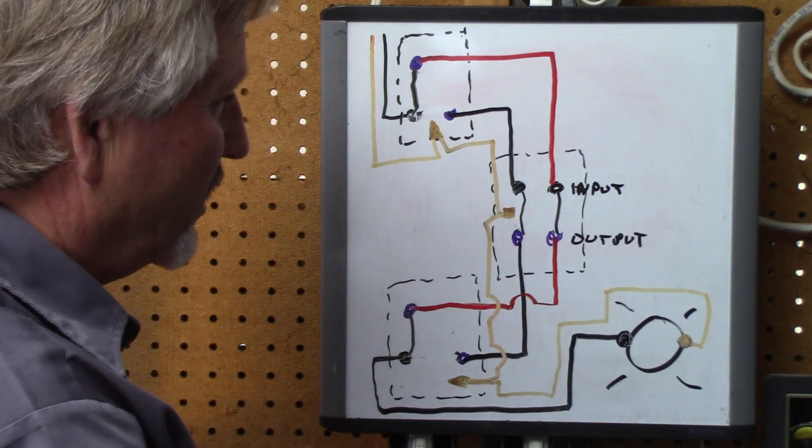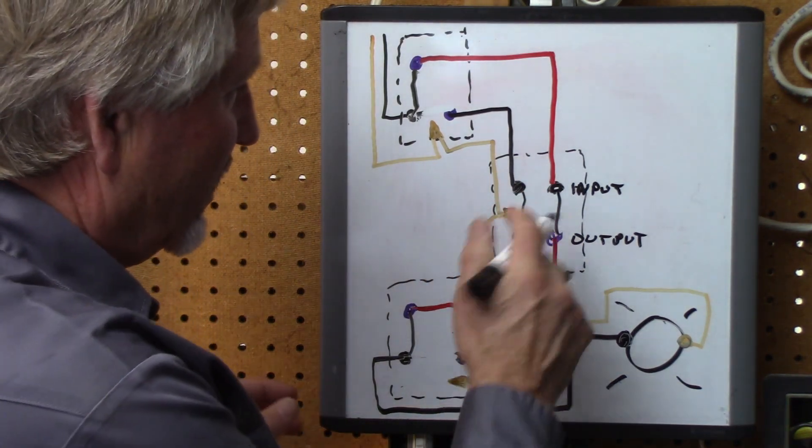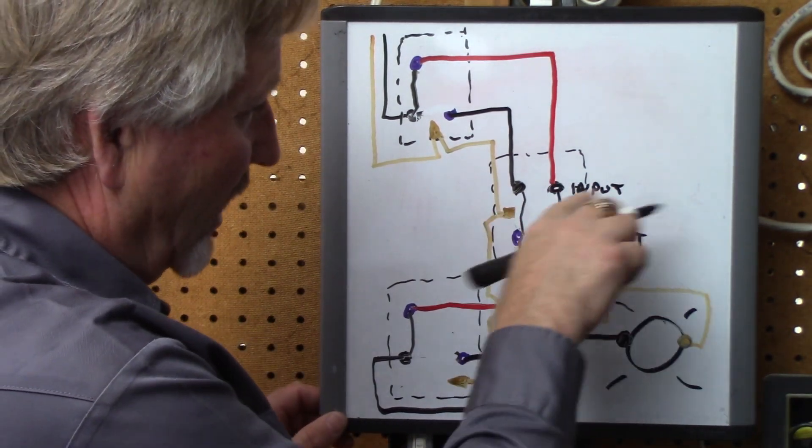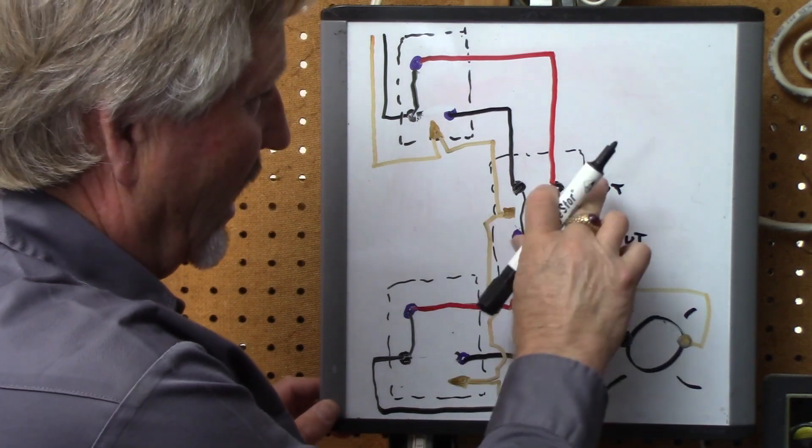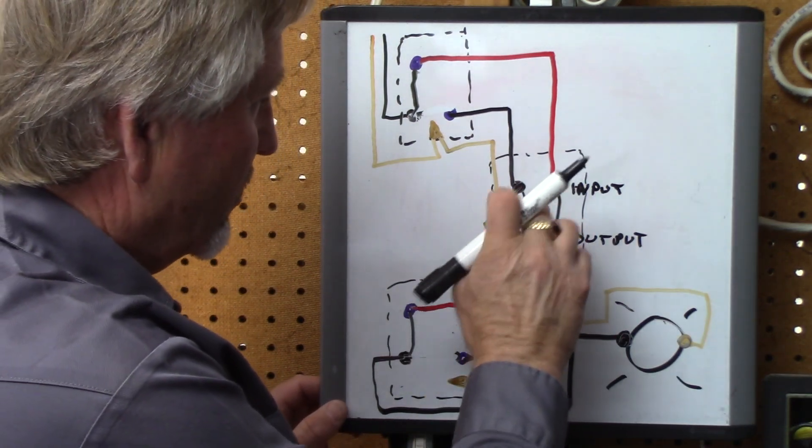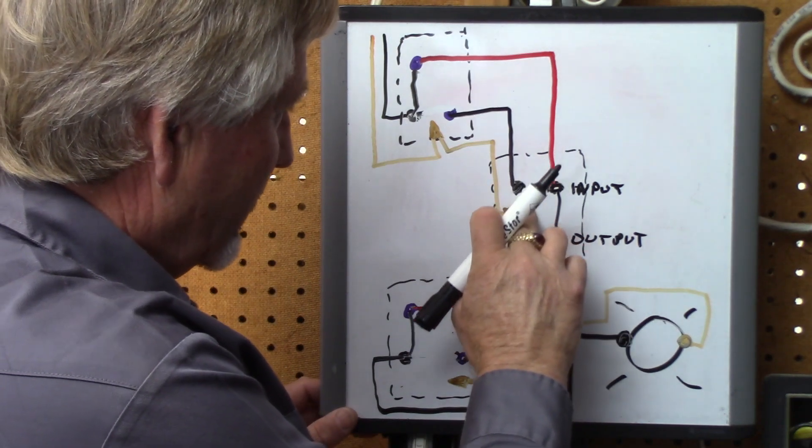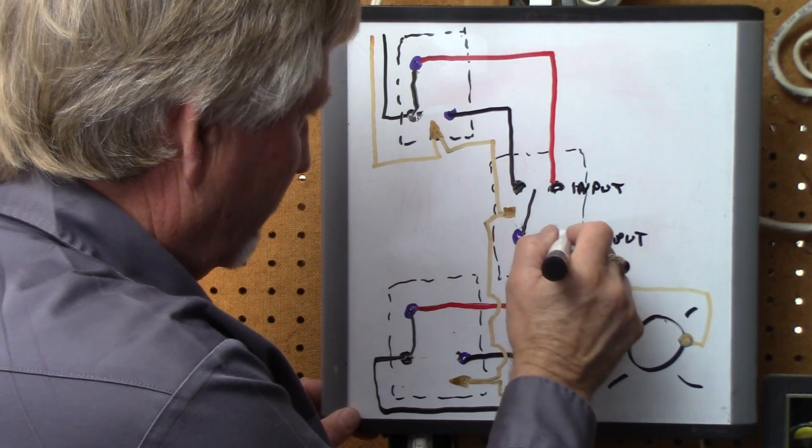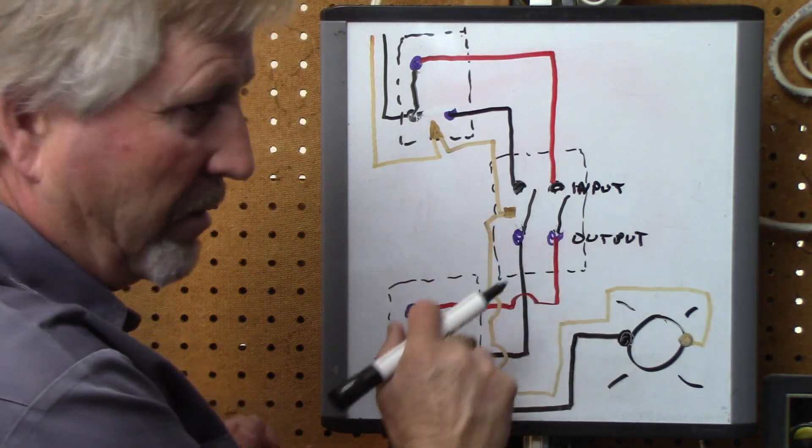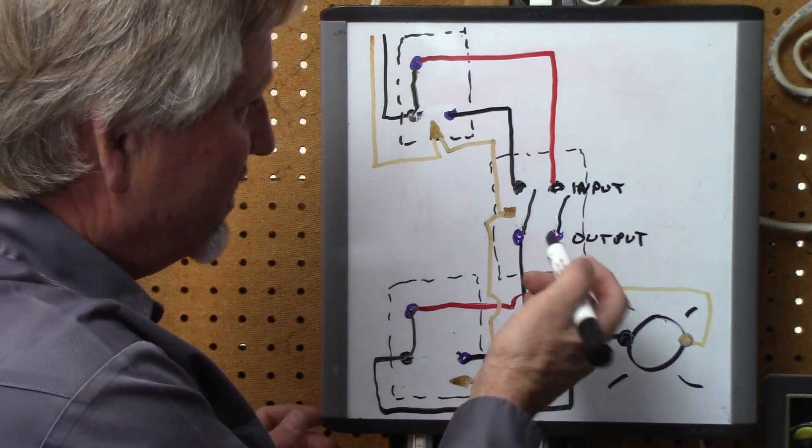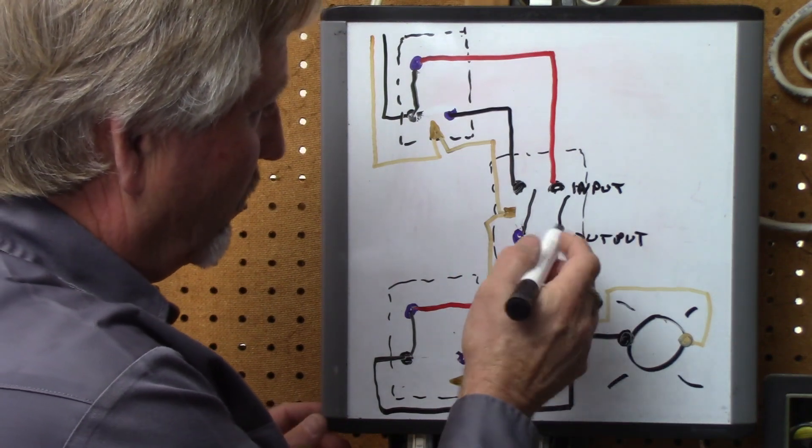Because what a double pole switch does. Instead of criss-crossing. They look exactly the same in most cases. But they're labeled differently. They're called line and load. In a 4-way. In a double pole switch. So what a double pole switch does. Is simply this. If it's on. Those are connected. If it's off. It's just like. Two single pole switches. Operated by one toggle. So that's also called. A double pole. Single throw. Or a double pole switch.